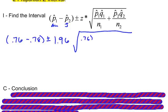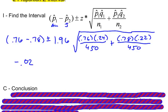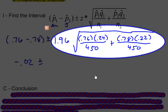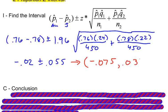That looks like this: 0.76 times 0.24 all over the sample size for the American car owners, which is 450, plus for the Japanese car owners 0.78 times 0.22, all divided by the sample size for the Japanese car owners, which is also 450. The difference here is negative 0.02. Everything after the plus or minus is called the margin of error, and it equals 0.055. When I do negative 0.02 plus 0.055 and negative 0.02 minus 0.055, I end up getting an interval that goes from negative 0.075 to 0.035.